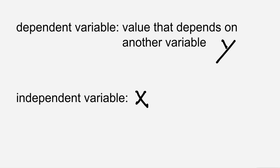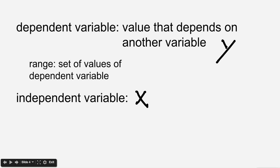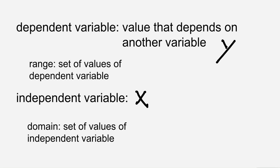Along with dependent and independent variables, a couple more vocab terms you need to know are range and domain. The range is the set of values of the dependent variable — whichever values y will hit. The domain is the set of values of the independent variable — whichever values x will hit over the course of the function.